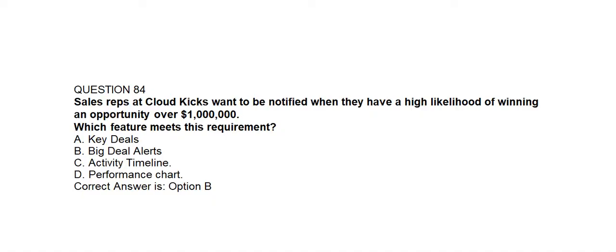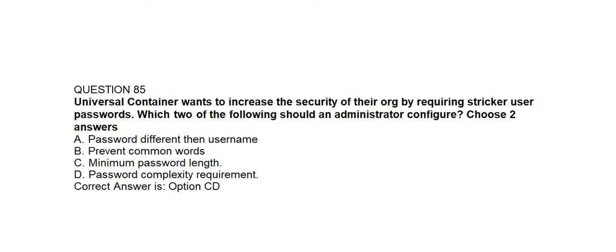Question number eighty-four. Sales representatives at Cloud Kicks want to be notified when they have a high likelihood of winning an opportunity over $1,000,000. Which feature meets this requirement? Option A: Key Deals. Option B: Big Deal Alerts. Option C: Activity Timeline. Option D: Performance Chart. Correct answer is Option B: Big Deal Alerts.